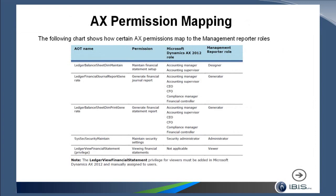Now let's talk about how security is set up in an AX environment. This chart is important — it maps AX permissions to Management Reporter roles. The first column is the AOT name (Application Object Tree name), which identifies the relevant AOT object for Management Reporter permissions. The permission name appears next to it as it shows in AX, along with the AX roles that by default contain these permissions. For instance, if you were assigned to the Accounting Manager role in AX, Management Reporter would bring you over as a Designer. If you're part of two different roles, it uses whichever grants the most permissions, so Designer wins over Generator.